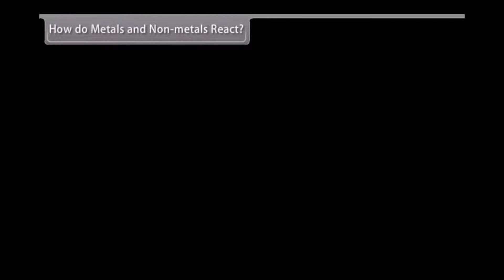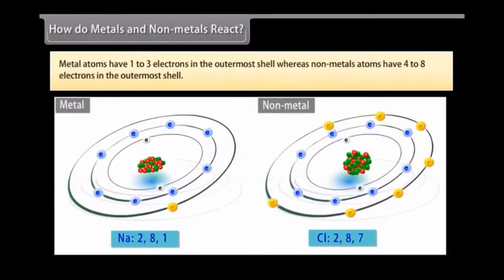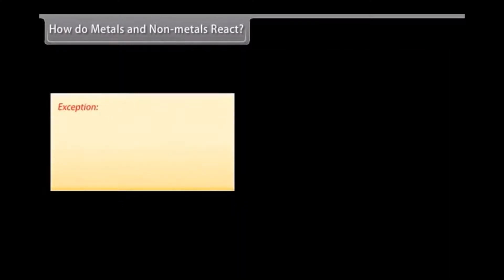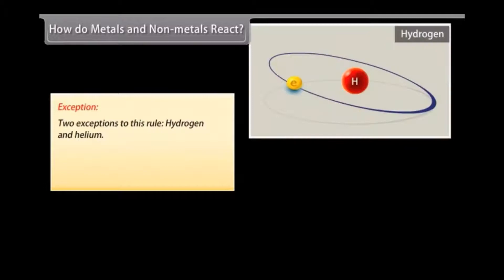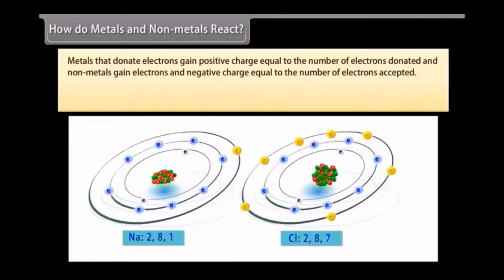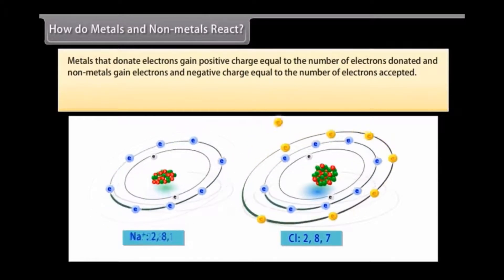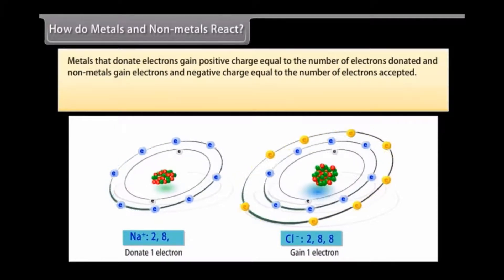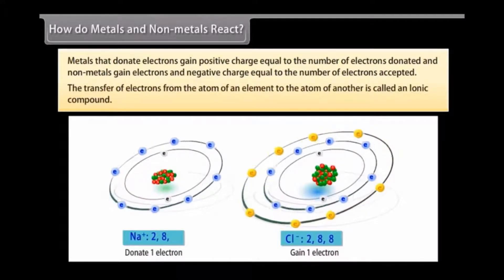How do metals and non-metals react? Metal atoms have 1 to 3 electrons in the outermost shell, whereas non-metal atoms have 4 to 8 electrons in the outermost shell. Exception: Two exceptions to this rule - Hydrogen and Helium. Metals that donate electrons gain positive charge equal to the number of electrons donated and non-metals gain electrons and negative charge equal to the number of electrons accepted. When a metal atom donates 1, 2 or 3 electrons from its valence shell to another non-metal atom that has the ability to accept these electrons, it is known as electrovalency. As a result of this, both these atoms form the structure of an inert gas. The transfer of electrons from the atom of an element to the atom of another is called an ionic compound.